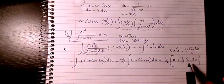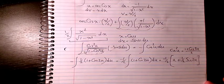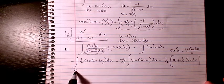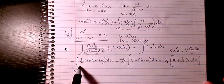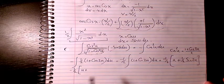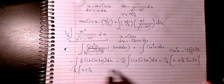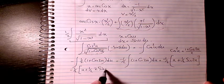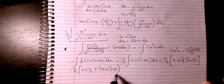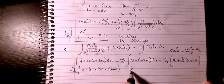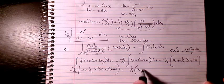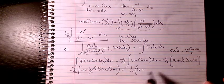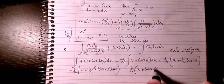I'll also apply the double angle identity: sin(2u) equals 2 sin(u) cos(u). Substituting that in, it becomes negative 1 over 2 times u plus 1 over 2 times 2 sin(u) cos(u). The 2's cancel, giving negative 1 over 2 times (u plus sin(u) cos(u)).